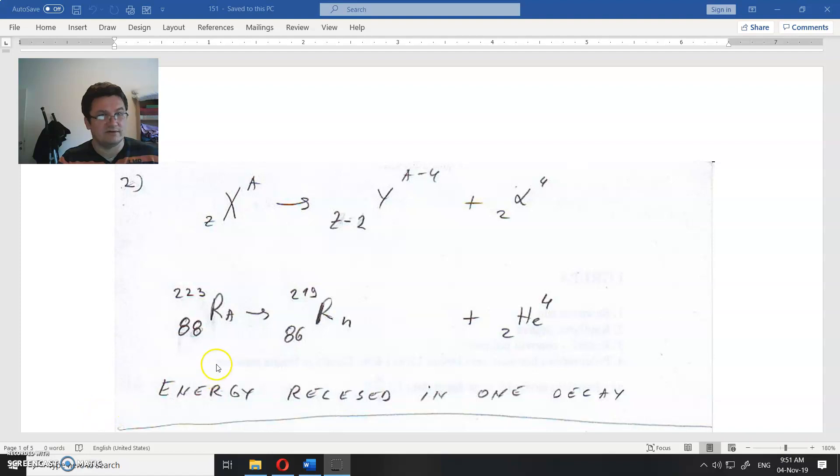In other words, you have radium that will decay into Rn—that's radon—and helium. So radium goes into radon and helium.